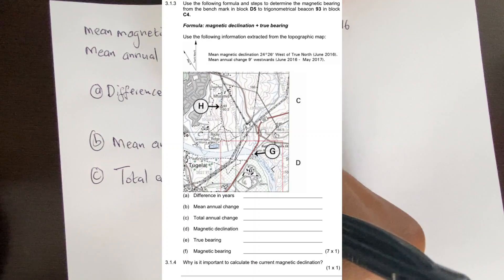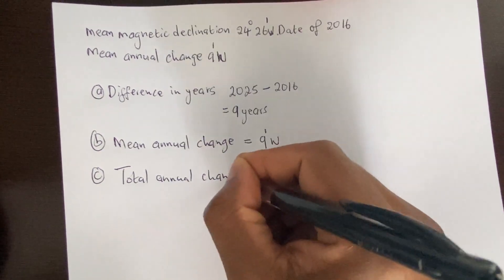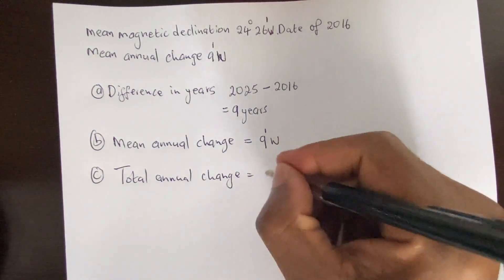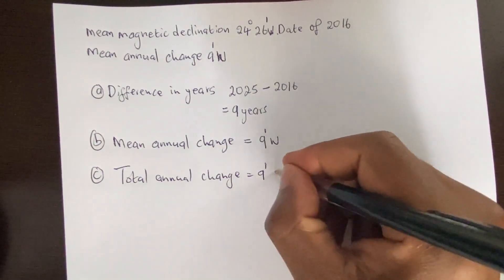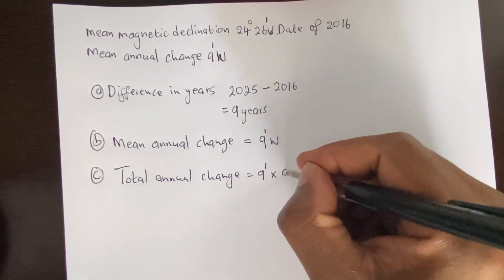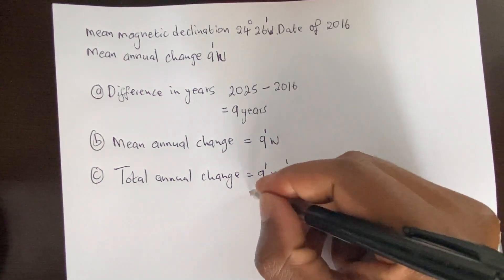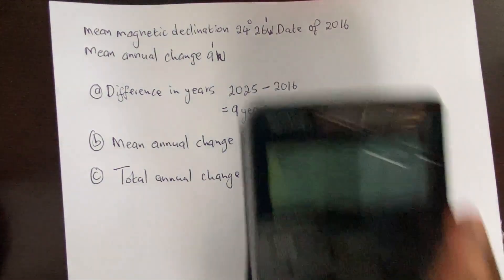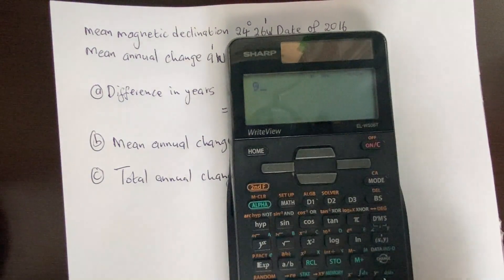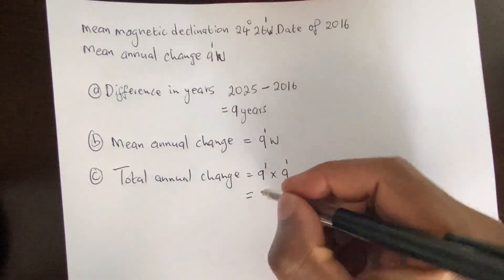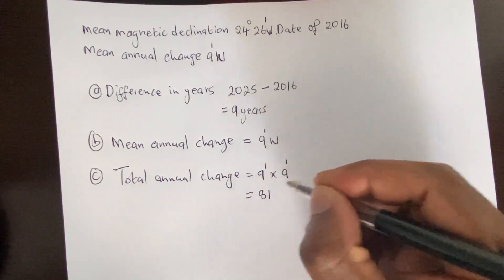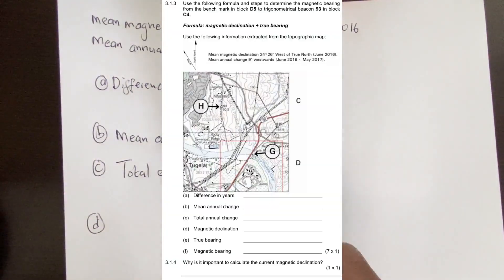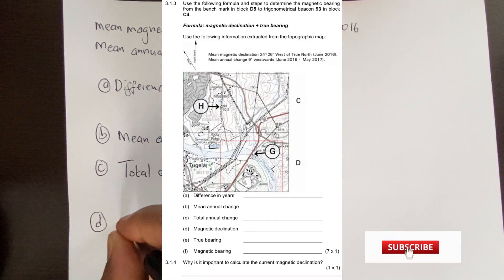To find the total annual change, we say 9 minutes west times 9 years. Since the direction is west, our answer will also be west. 9 times 9 equals 81, so the total annual change is 81 minutes westward.